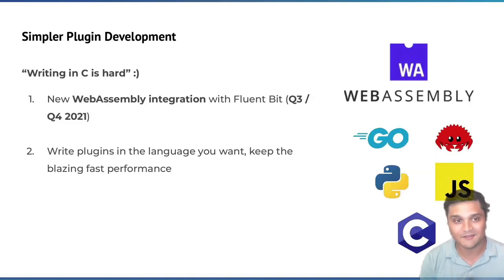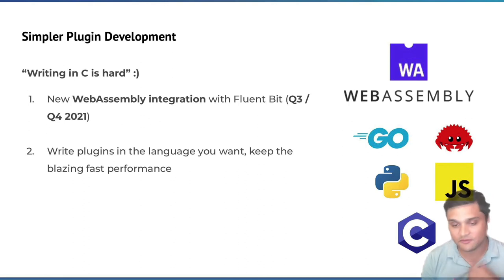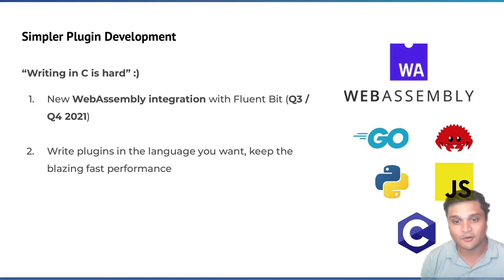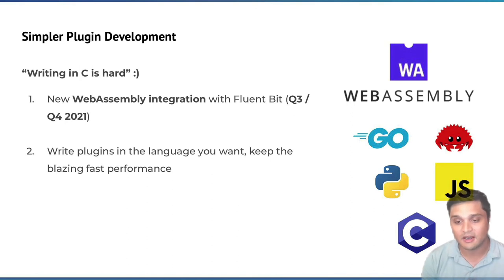Simplifying plugin development — one comment we always hear is that writing C is hard, and we get it. We want to make it very simple for you as a developer or engineer to adopt what you need and perform the functionality you need at the highest performance possible. So we're planning WebAssembly integration with FluentBit later this year — write plugins in Go, Rust, Python, JavaScript, or C and compile them down to still get the blazing fast performance that you need.